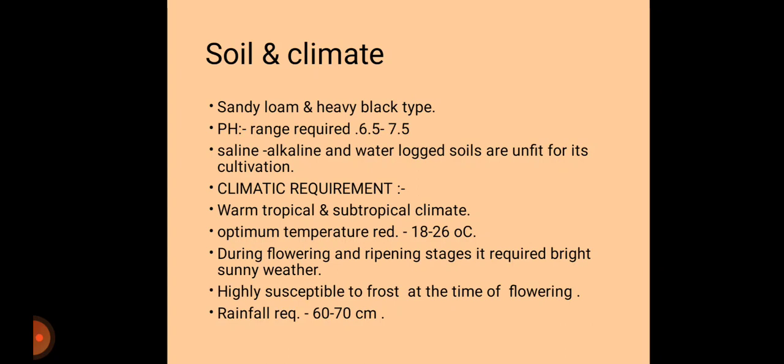Regarding soil and climatic requirements, sandy loam to heavy black soil is suitable for pigeon pea production. The pH range required is 6.5 to 7.5. Saline, alkaline, and waterlogged soils are unfit for pigeon pea cultivation; waterlogged soil is particularly harmful for its production.